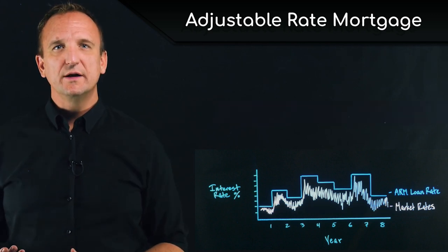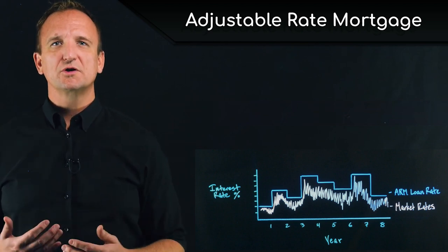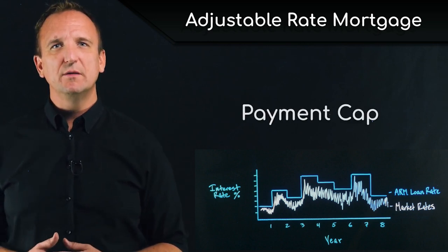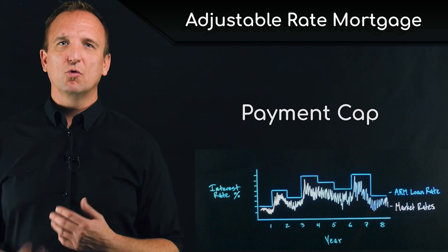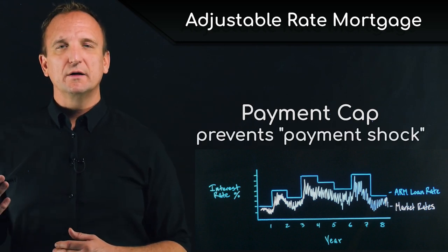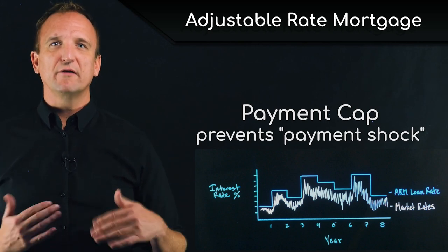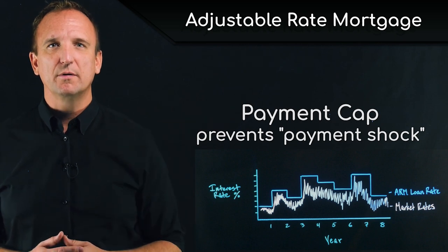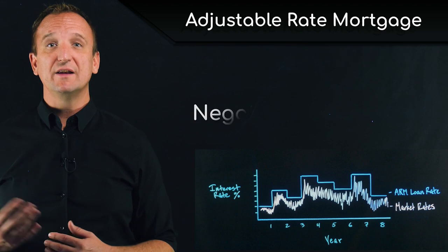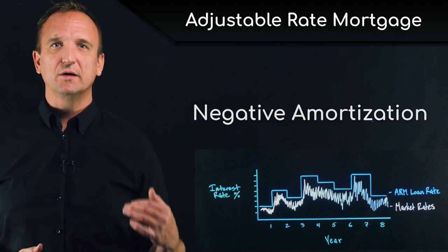Once the interest rate is reset and the new payment is calculated, the loan will also invoke what's called payment caps. The payment cap is a limit to how much a payment can go up in order for the borrower to not experience what's called payment shock. Often the interest rate can go up more than one point at an adjustment interval, but there will be say a five or ten percent limit to how much the payment can go up. This can sometimes put us into a situation where we have negative amortization, because interest is accruing at a rate faster than it's being paid down.